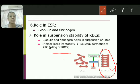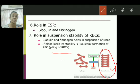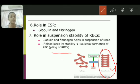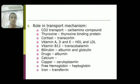When blood is in circulation, rouleaux formation does not take place and RBCs suspend properly — this is known as suspension stability of RBCs. Globulin and fibrinogen play an important role in maintaining this suspension stability.